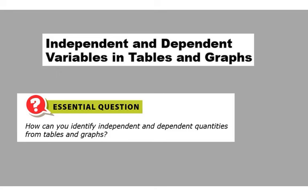In this lesson we're going to be looking at independent and dependent variables in tables and graphs. We need to be able to identify independent and dependent quantities from tables and graphs. We're going to look at some real world situations and try to understand what the independent and dependent variables are, and we're going to put them in tables and graphs.